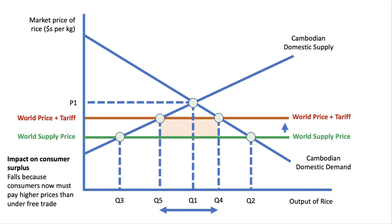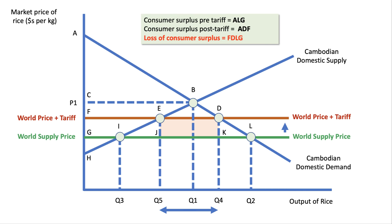Thinking about consumer welfare — consumer surplus will fall because consumers must now pay more for their rice than under free trade conditions. I've added letters to various parts of the diagram. I strongly recommend you use letters in the exam rather than shading, as shading comes across as untidy. Consumer surplus before the tariff — the quantity bought was Q2, so it's the area underneath the demand curve and above the price: area ALG. After the tariff the price goes up, quantity contracts to Q4, so consumer surplus is ADF, meaning the area of consumer surplus lost is FDLG.